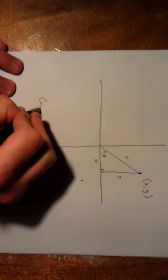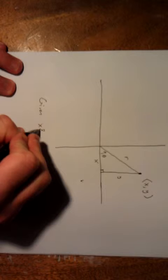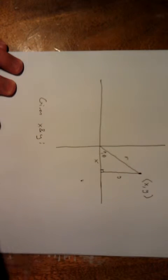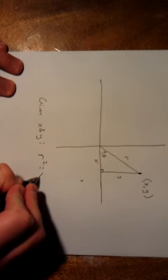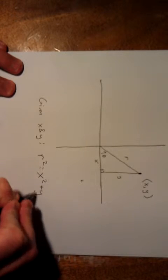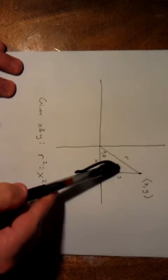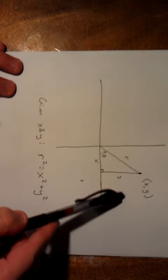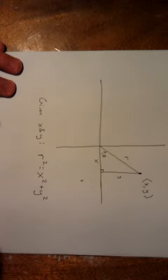So given x and y, we can calculate r using the Pythagorean theorem. Pythagorean theorem states that the square of the hypotenuse is the sum of the squares of the lengths of the legs. So r squared is equal to x squared plus y squared.